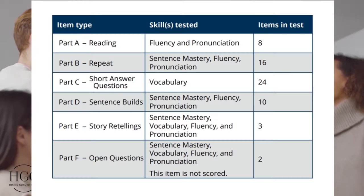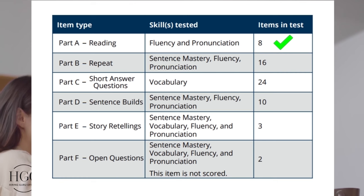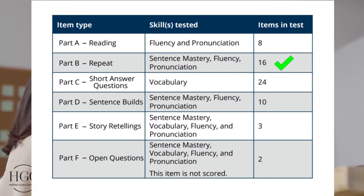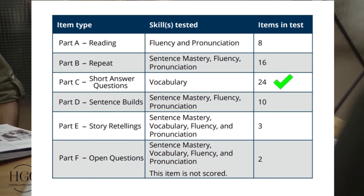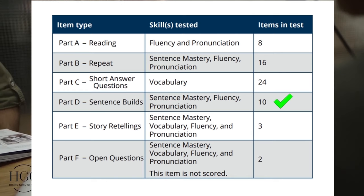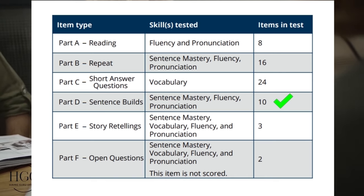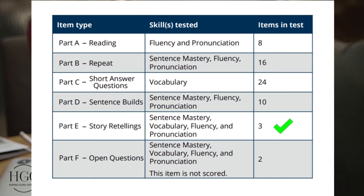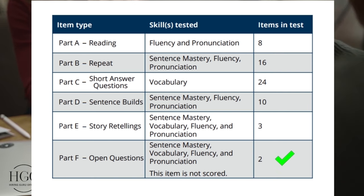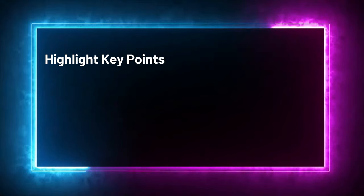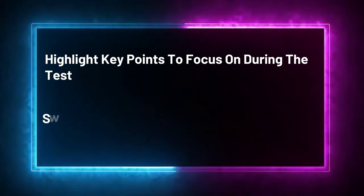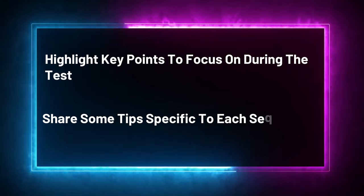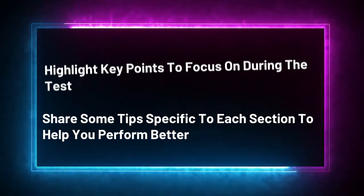This test has six sections: Part A Reading, Part B Repeat, Part C Short Answer Questions, Part D Sentence Builds, Part E Story Retelling, and Part F Open Questions. I will highlight key points to focus on during the test and then share some tips specific to each section to help you perform better.